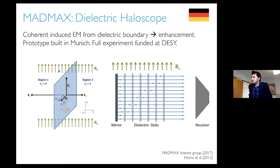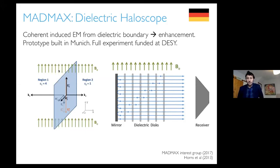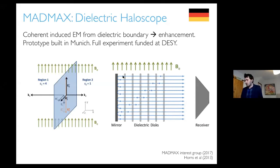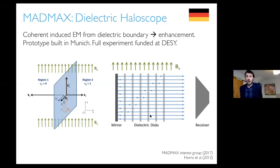One way to extend the range is the dielectric haloscope idea — the acronym is Mad Max. Here you use dielectrics to change the resonant frequency. At a dielectric boundary, the axion-induced electric field is different in the dielectric and in vacuum because the dielectric constant appears in Maxwell's equations. The dielectric boundary condition requires matching the electric field across the boundary, which means there's a response field that leads to photon production from the boundary. If you position your dielectrics just right, you get constructive interference between photons produced from all the dielectric boundaries, enhancing your signal. This is a Fabry-Perot cavity, and you can compute the boost factor.